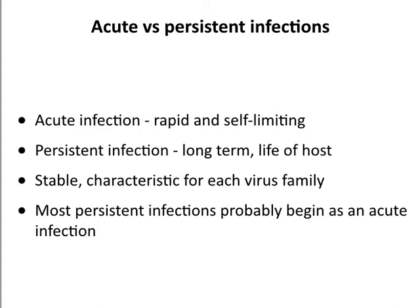In contrast, persistent infections are long-term. They last your whole life. You get them as a baby, adolescent, teenager, or adult, and they stay with you the rest of your life. The pattern of persistence—how they work to stay around for a long time—is characteristic for each virus family.